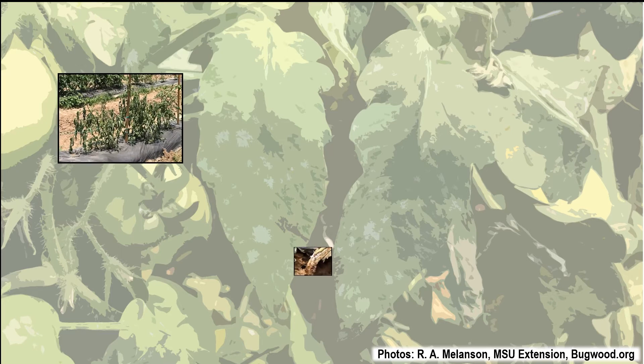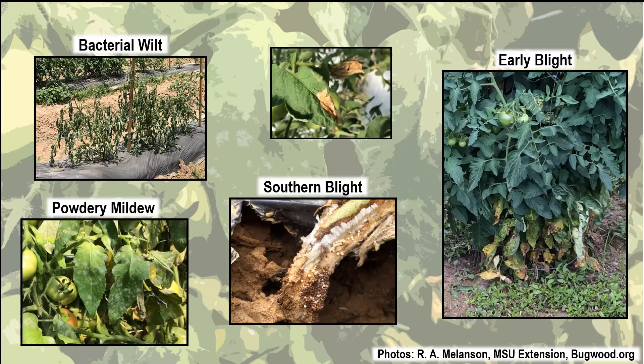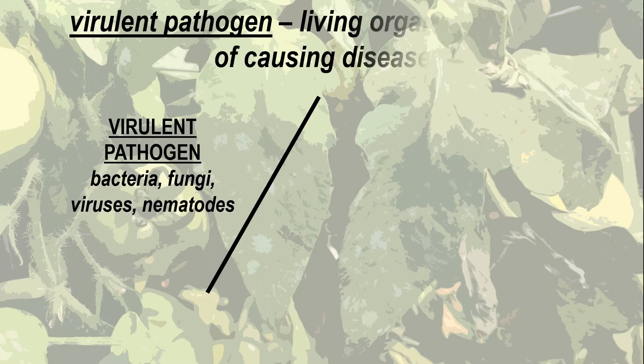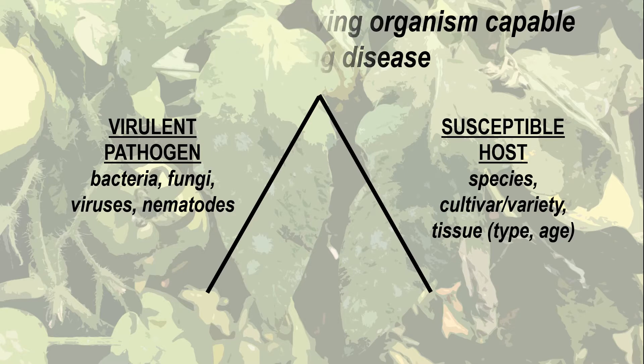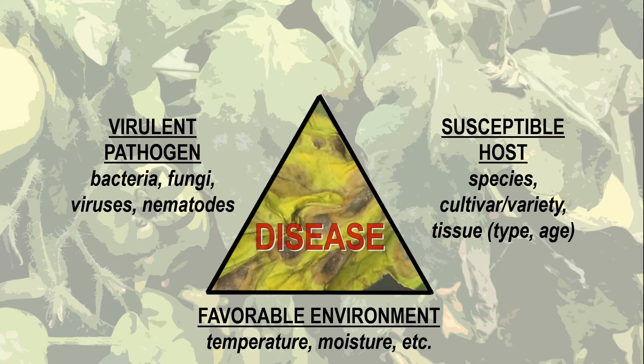Each year tomatoes are threatened by a number of diseases that have the ability to damage plants and reduce yields. In some areas certain diseases are more problematic than others. The development of these diseases depends on the presence of a virulent pathogen, a susceptible host, and favorable environmental conditions. A specific disease develops when all three conditions for that disease are met.